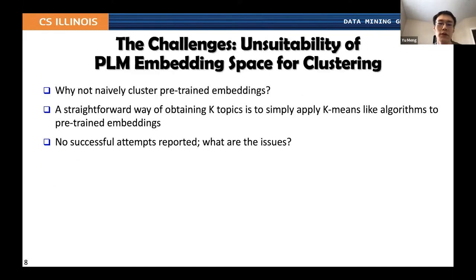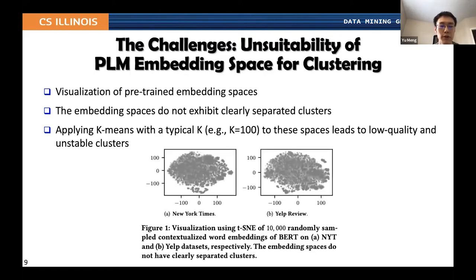Let's look into the challenges of leveraging pre-trained language models for the topic discovery task. The first question is: why not naively cluster the pre-trained embeddings? A straightforward way of obtaining k topics is to simply apply k-means-like algorithms to the pre-trained language model representations. When we visualize the representation space of pre-trained language models using BERT as the backbone, we can see that embedding spaces do not exhibit clearly separated clusters, meaning clustering results will be of low quality and unstable.